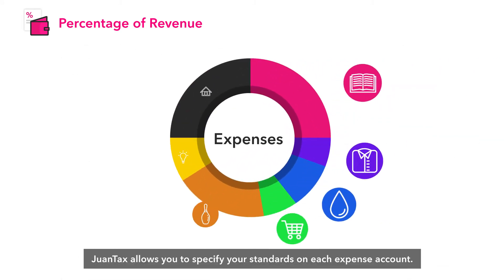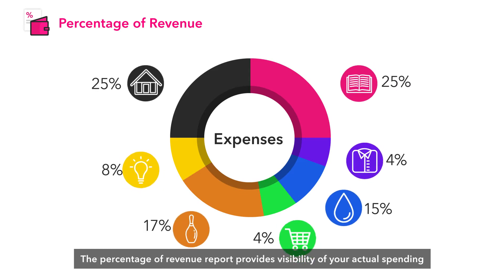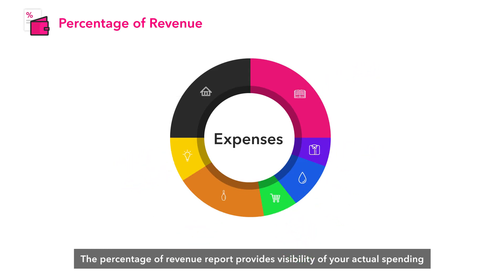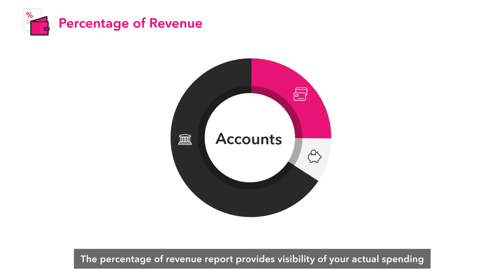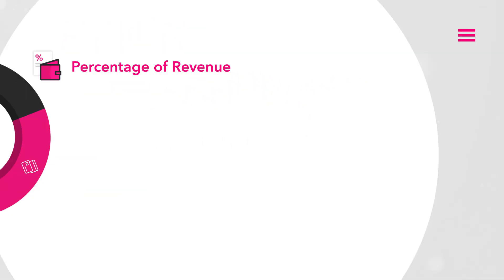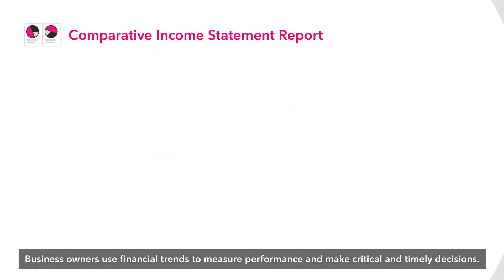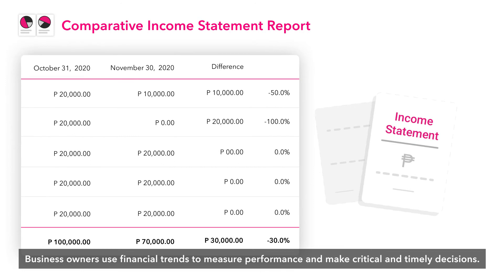OneTax allows you to specify your standards on each expense account. The percentage of revenue report provides visibility of your actual spending compared to your revenue and is pegged against your set standards. Business owners use financial trends to measure performance and make critical and timely decisions.